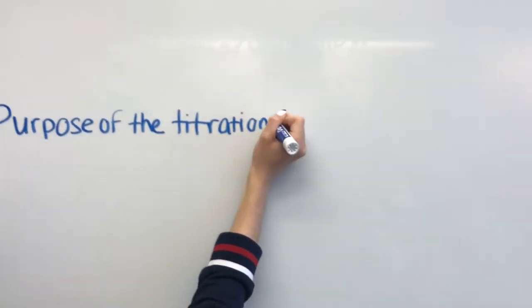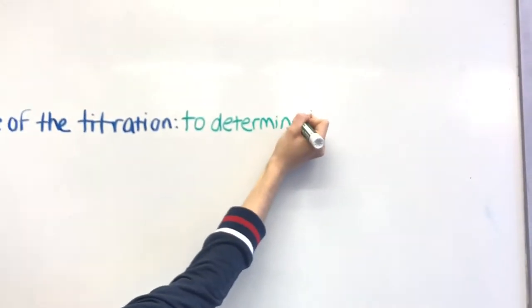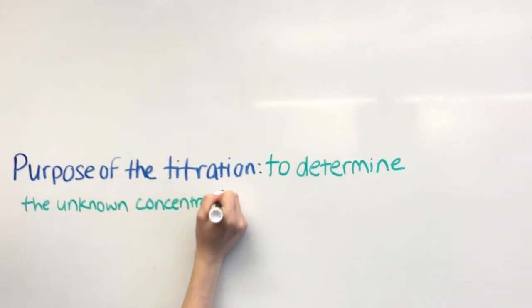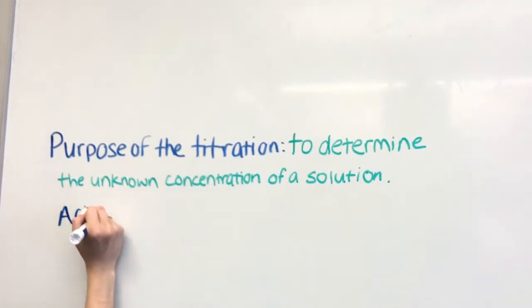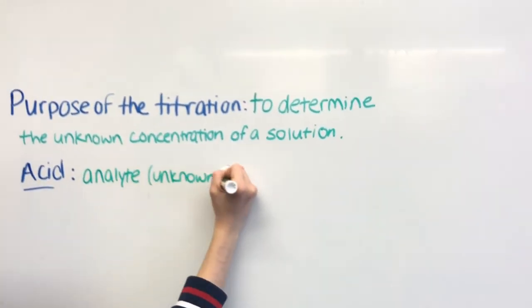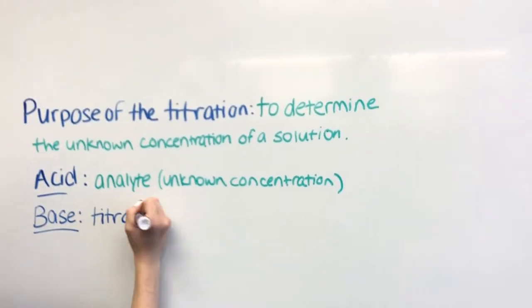Today we will be conducting a titration. The purpose of a titration is to determine the unknown concentration of a solution. The acid with the unknown concentration is called the analyte, and the base with the known concentration, measured in molarity, is called the titrant.